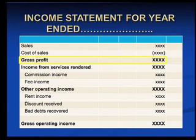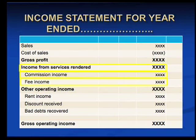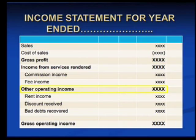We take that gross profit and add the income from services rendered. It's very important to look at a business and see whether it is a trading or service business — or a combination of both. Therefore you add your additional income. In this case we had commission income and fee income, which we add to the gross profit to give us our other operating income.